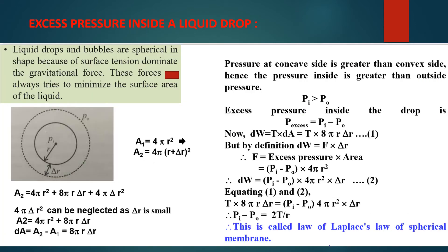For concave meniscus, the resultant force due to surface tension is vertically upward. Because of that, the pressure at A on the concave side is larger than the pressure at B on the convex side of the meniscus.